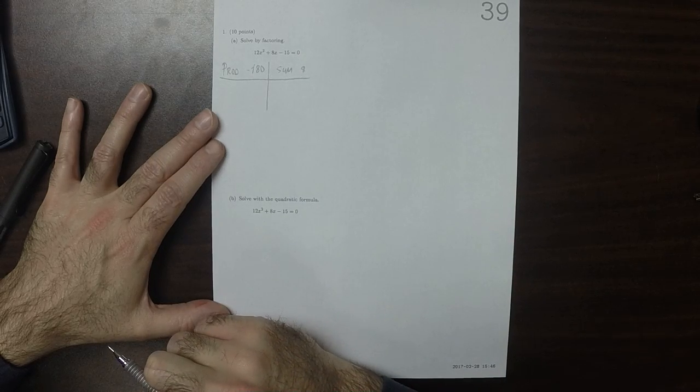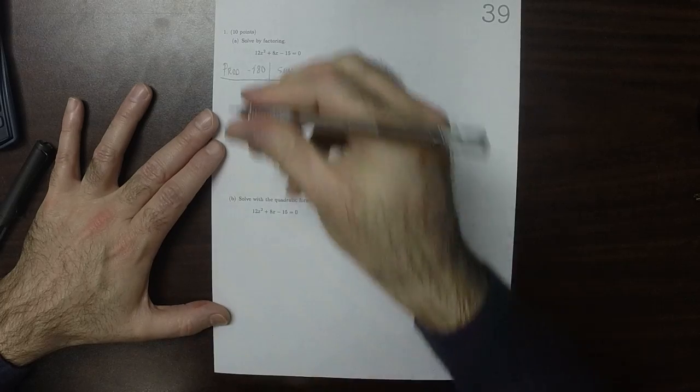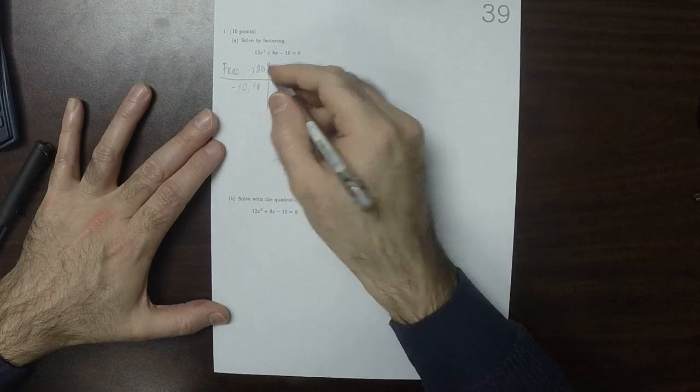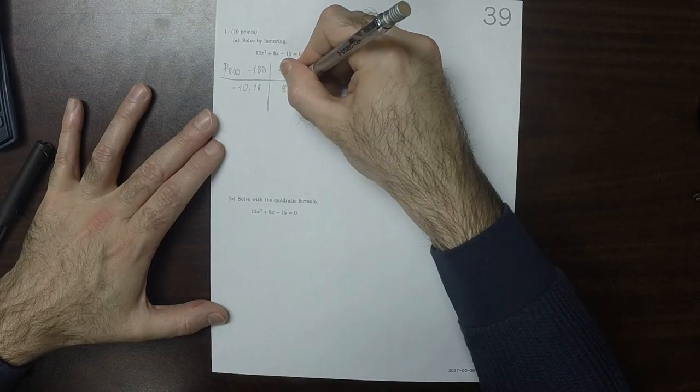Well, how about 18 and negative 10? Negative 10 and 18, the product is 180, and the sum is 8.